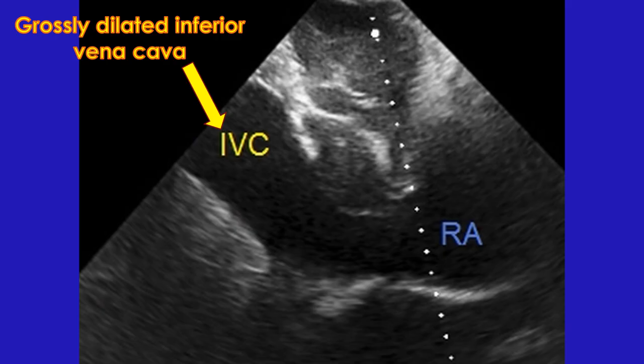Parts of the superior and inferior vena cava can also be imaged by echocardiography. Inferior vena caval size is often used at the bedside to assess hydration status for guiding fluid therapy. Normal inferior vena cava collapses in inspiration with at least 50% decrease in dimensions. If the inferior vena cava is dilated and does not collapse in inspiration, it is called plethora of the inferior vena cava, which indicates high right atrial pressure.